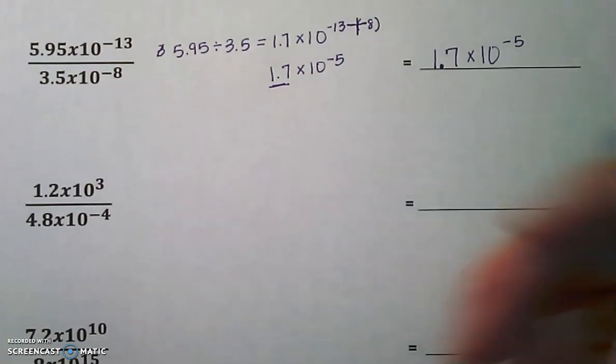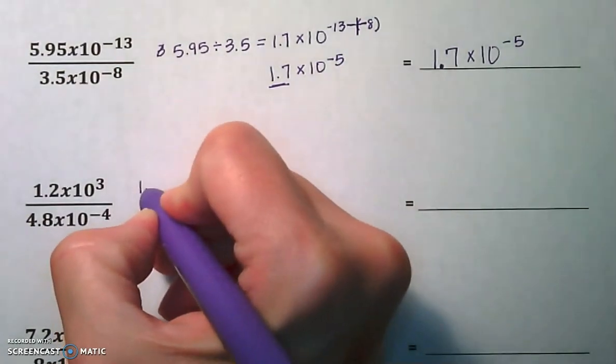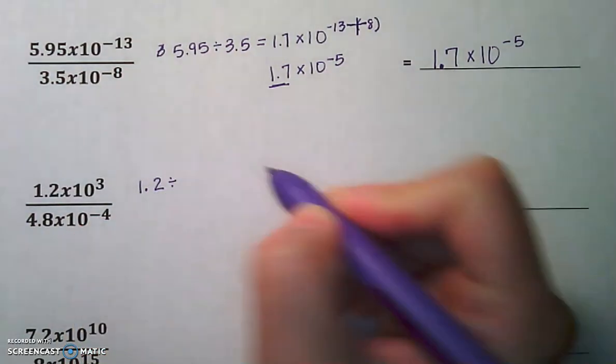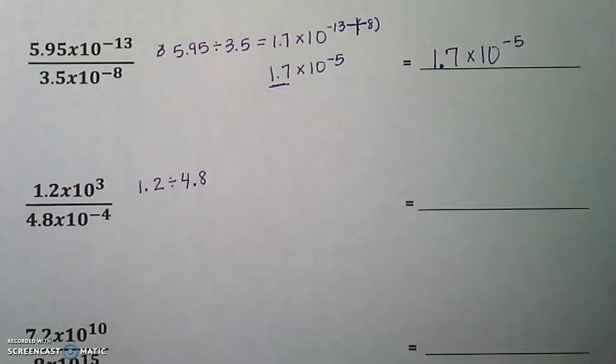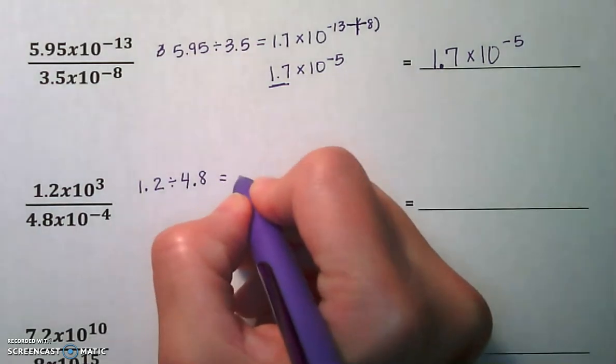We are going to be dividing 1.2 by 4.8. So we know that 1.2 is smaller than 4.8, so we need to go ahead and be thinking we may have to adjust our answer here. So 1.2 divided by 4.8 is 0.25.